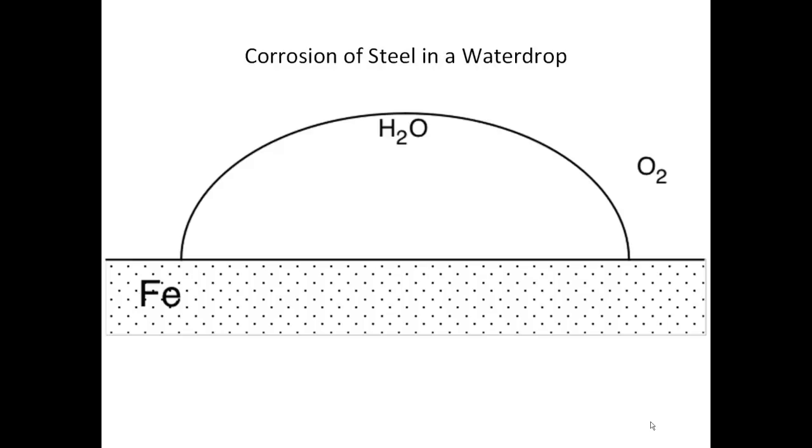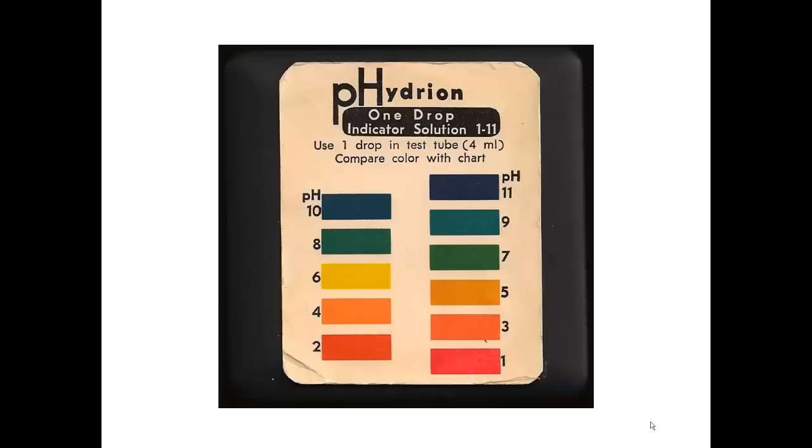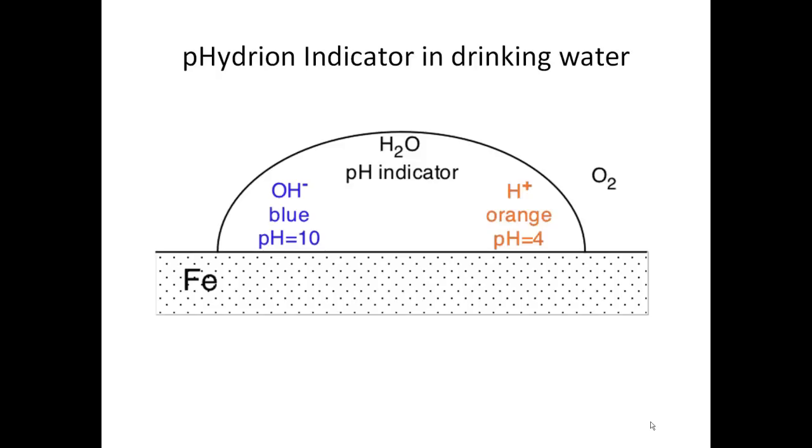We're going to have a water drop with air on the outside and we'll put a little pH indicator solution into the water so that if it's green it means it's neutral, pH 7 or 8. If it's blue, it'll be caustic or basic, pH 9 or 10. And if it's acidic, it'll be orange, maybe pH 4 or 5. So remember, blue means hydroxyls OH minus, and orange means H plus or acidic.